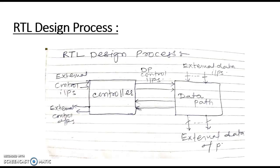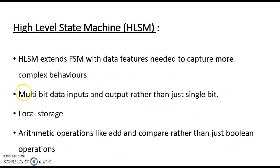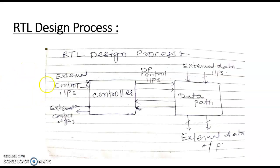In RTL design process, we need to design two things: one is the datapath component and another one is the controller. In the datapath component we will have registers, adders, and comparators — components that perform operations. Those operations are performed depending upon the control signals generated by the controller. The controller will have certain inputs and generate certain outputs. As mentioned in a previous video, a controller can be formed using state registers and combinational logic. That is the same approach we are going to use in the RTL design process.